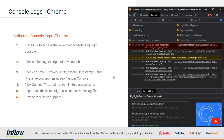Press F12 to access the developer console and then highlight the Console tab. From there, click on the cog in the top right of the developer bar — you'll see it is currently highlighted in blue in the screenshot. That will bring up checkboxes below. There are three boxes that aren't checked by default that need to be checked: Log XMLHttpRequests, Show Timestamps, and Preserve Log Upon Navigation. Once done, click on the Console tab and make sure all filters are selected — next to 'Filter' it should say 'All Levels.'